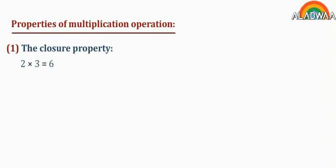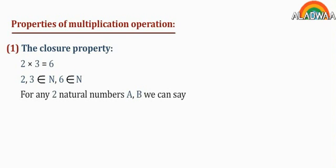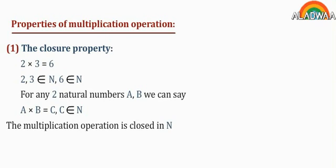Properties of the multiplication operation. Property 1: the closure property. For example, 2 times 3 equals 6. Both 2 and 3 belong to the set N, and 6 also belongs to the set N. Therefore, for any two natural numbers a and b, we can say that a times b equals c, where c belongs to N. The multiplication operation is closed in N.